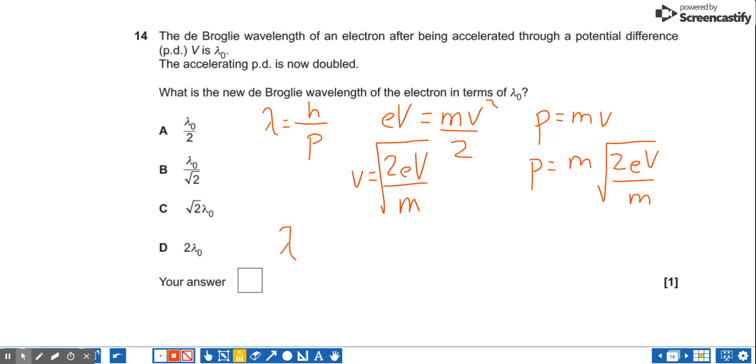So the wavelength lambda is equal to H over that big term 2EV over m.